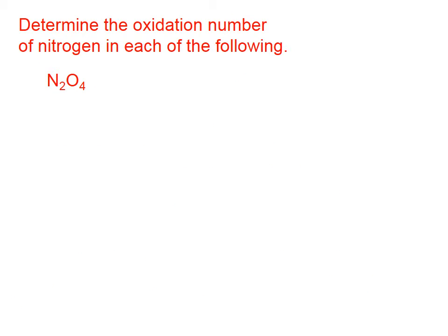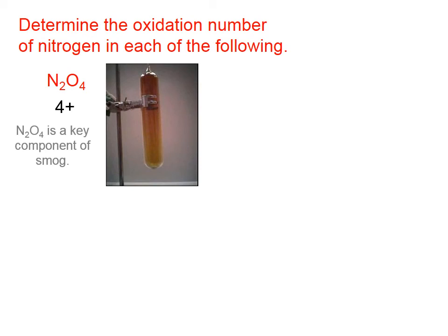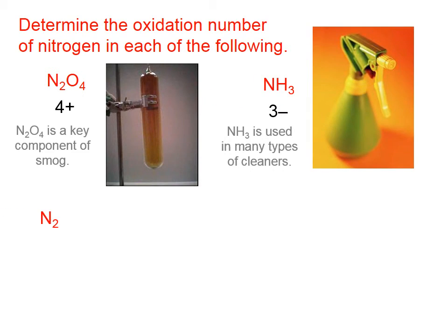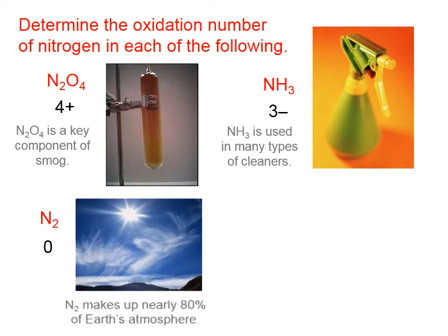Let's determine the oxidation number of nitrogen in several compounds. In dinitrogen tetroxide (N₂O₄), there are 4 oxygens each with an oxidation number of 2−, so each nitrogen must be 4+. In ammonia (NH₃), each hydrogen is 1+, therefore nitrogen must be 3−. In nitrogen gas (N₂), which is nitrogen in its elemental form, the oxidation number on each nitrogen is 0.